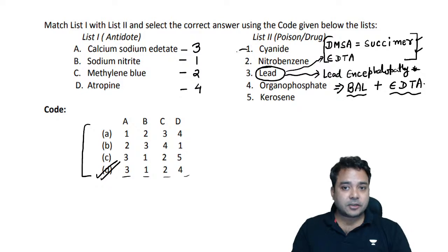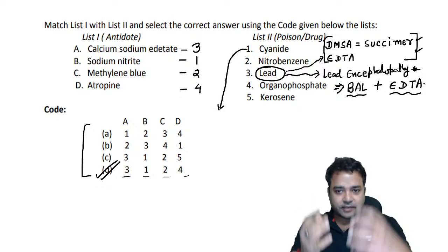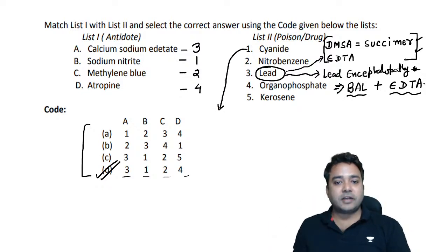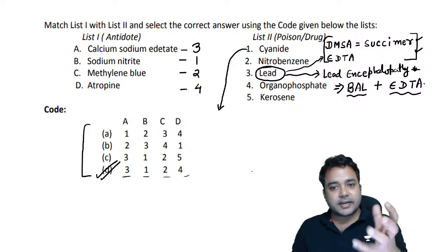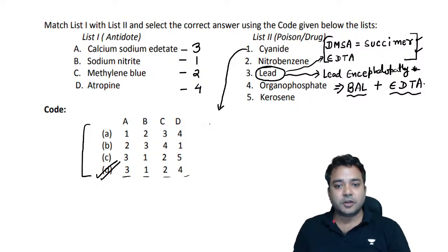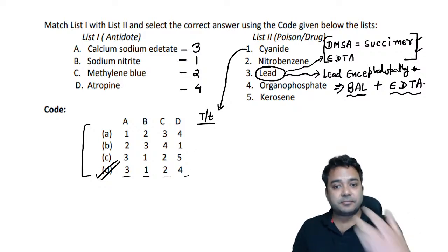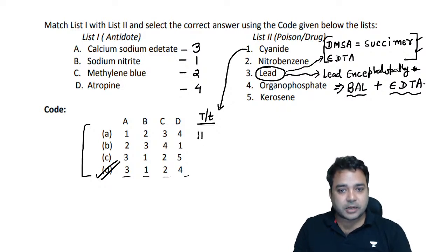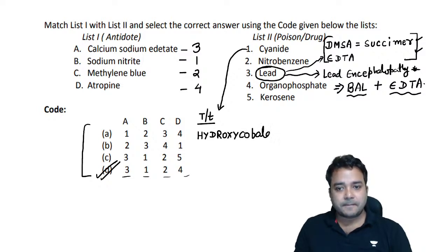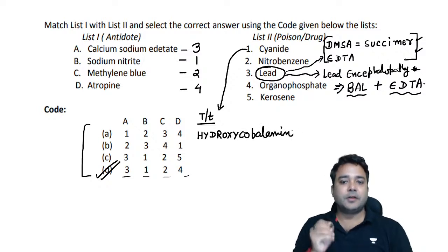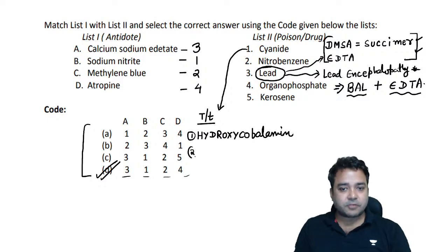For cyanide, questions have been asked every year for the last five to seven years. Regarding treatment, you can use a single direct binding agent called hydroxocobalamin. Alternatively, a kit consisting of three agents called Lily's kit can be used.